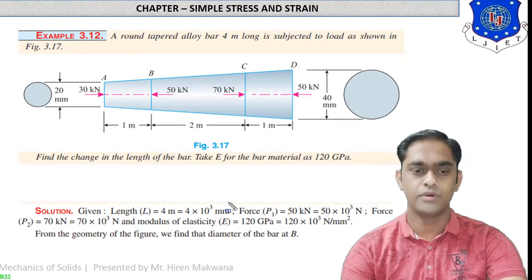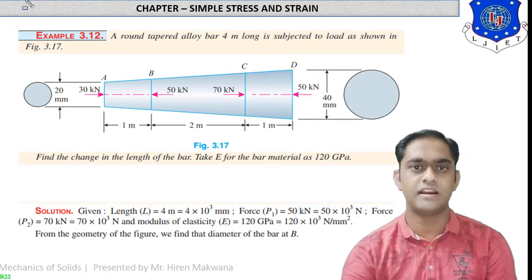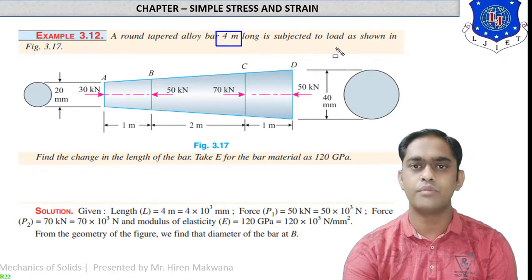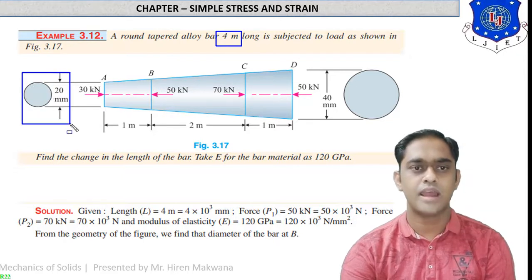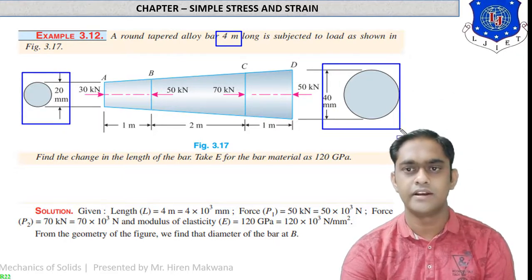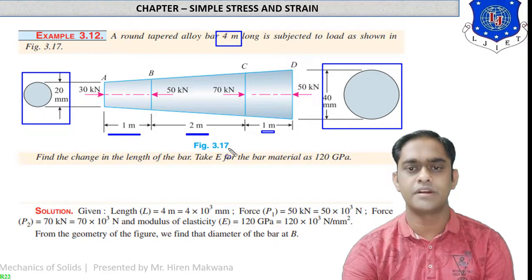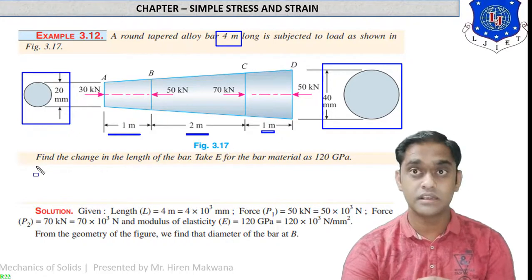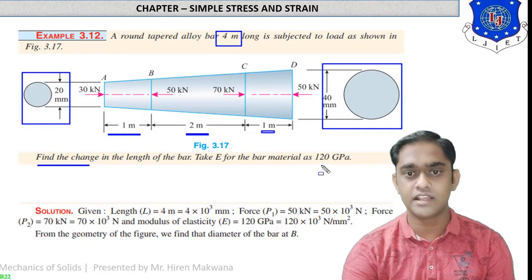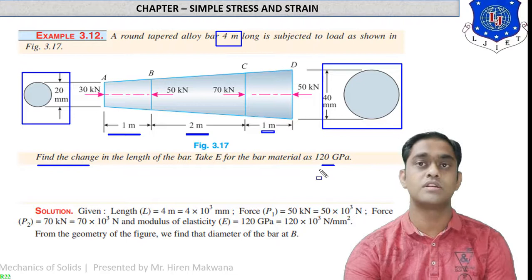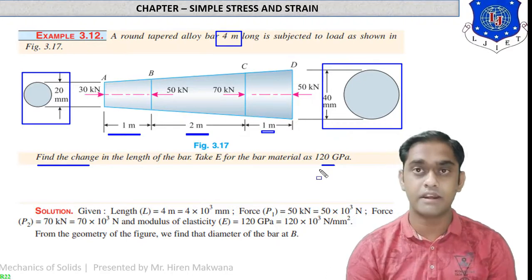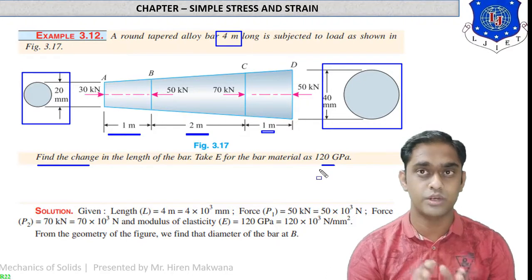Now a more critical and important numerical. A round tapered alloy bar 4 meters long is subjected to loads as shown in the figure. The smaller diameter is 20 mm and the bigger diameter is 40 mm. The length is divided into three parts: 1 meter, 2 meters, and 1 meter. Find the change in length of the bar given Young's modulus = 120 GPa = 120×10³ N/mm².